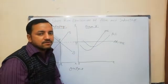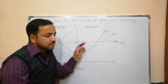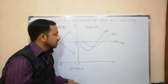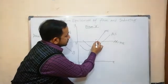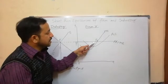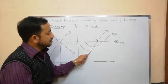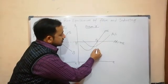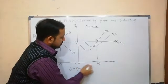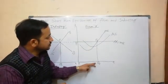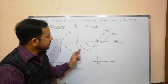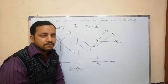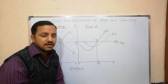To find the equilibrium point of Firm A, we apply the two conditions: MR equals MC. At point E1, the MC curve cuts the MR curve from below, so Firm A gets equilibrium at point E1. The equilibrium quantity of Firm A is OQ1, the price is OP, and the equilibrium point is E1.